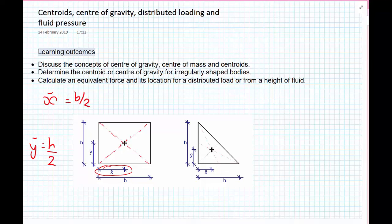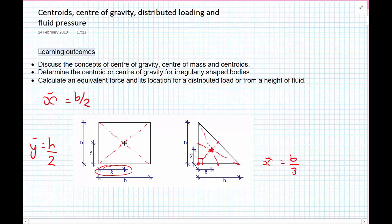Also well-known, but not everyone remembers: for a triangle, we can draw dotted lines from each corner to the midpoint of the opposite edge, and where they meet is the geometric center of the body. So if we have a width b, the x-coordinate of the centroid, x-bar, equals b divided by 3, and likewise the y-coordinate y-bar equals h divided by 3.